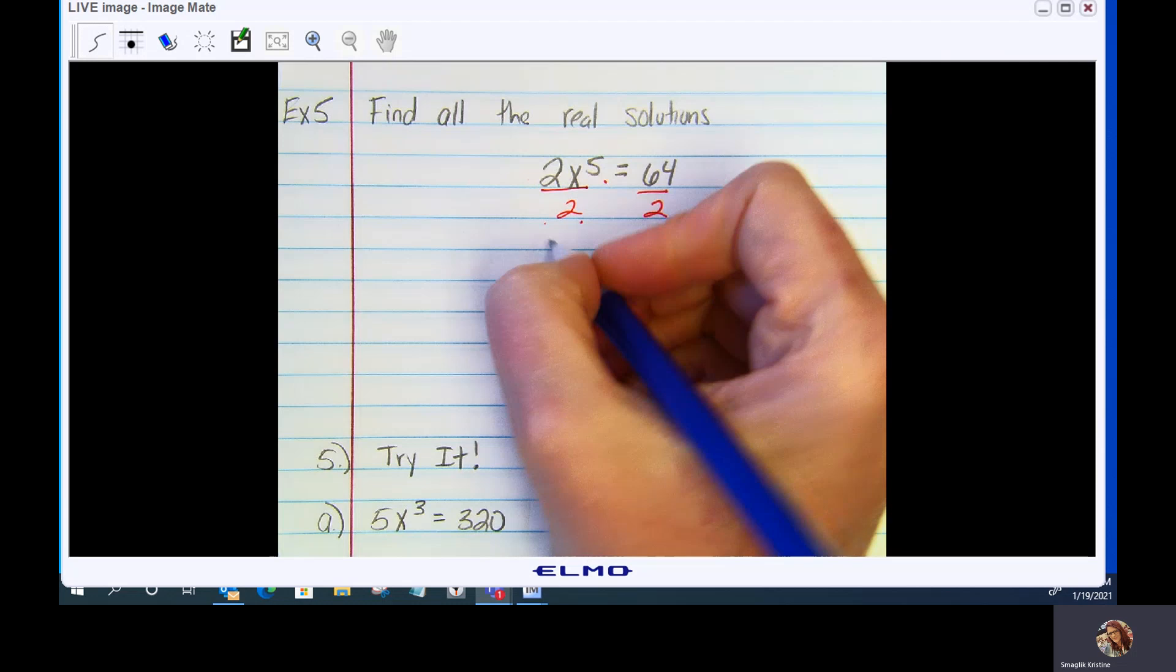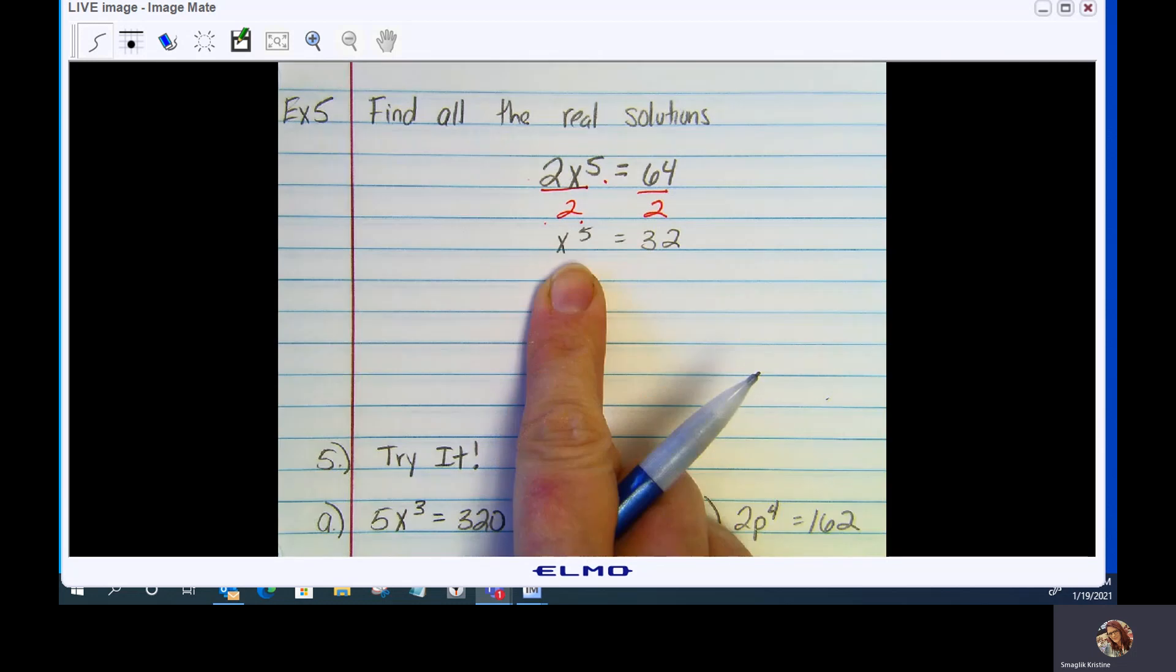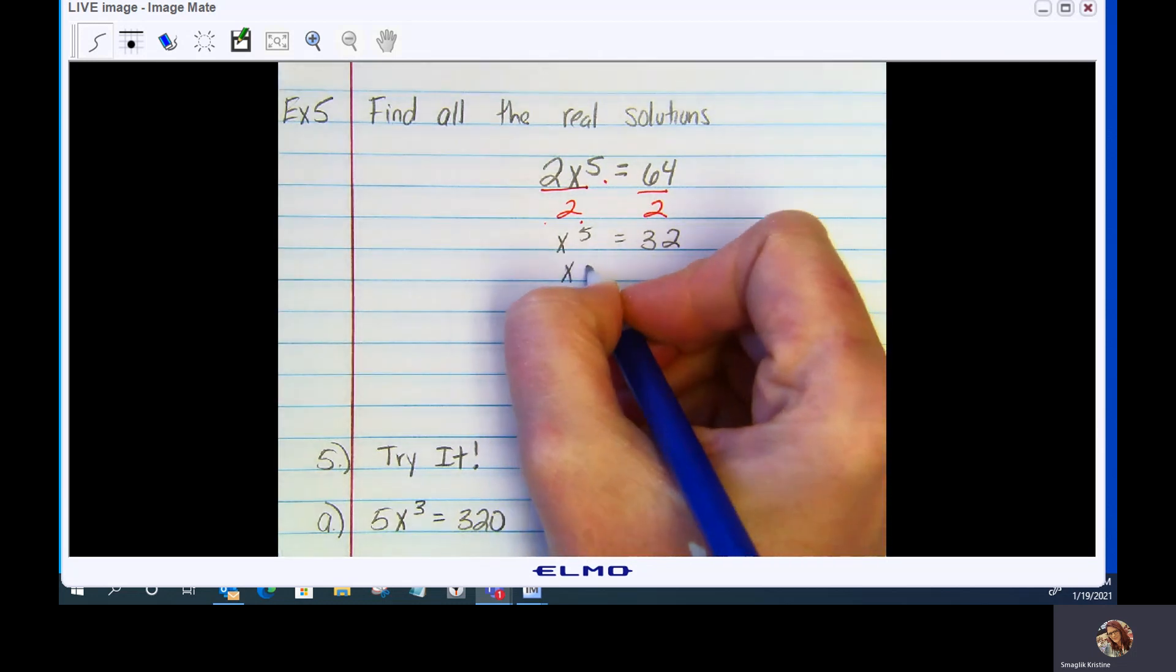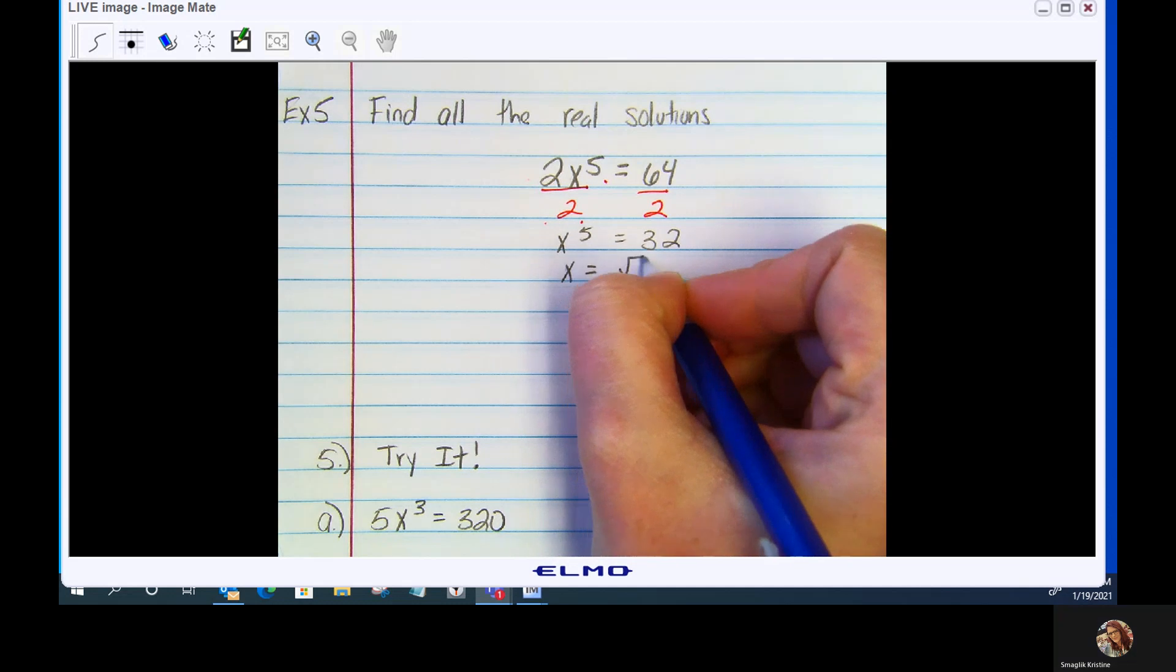To undo the power of 5, you would take the 5th root. So we will now have x equals the 5th root of 32.